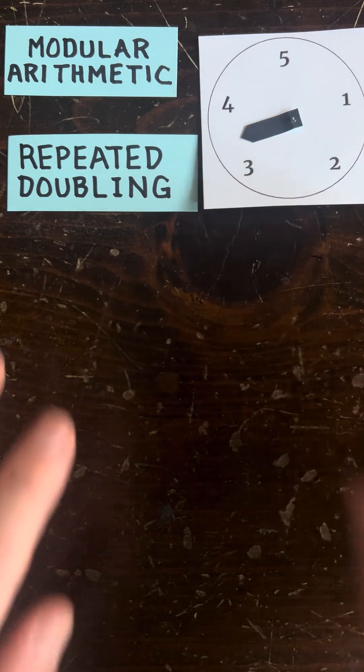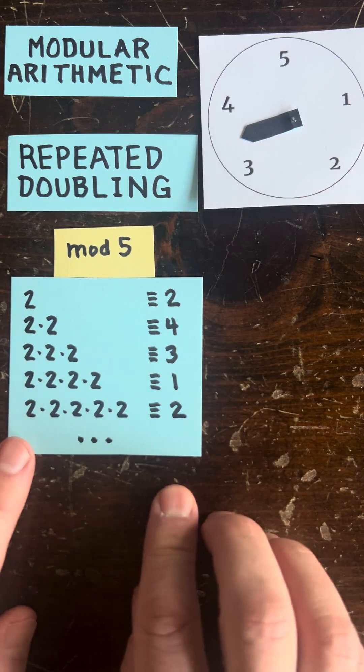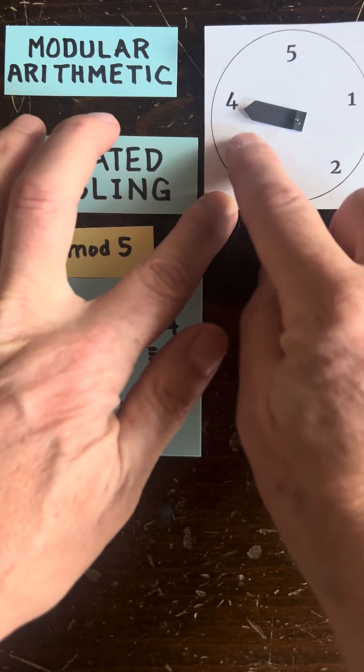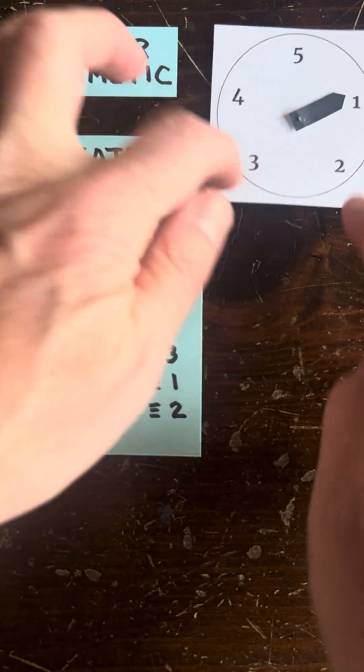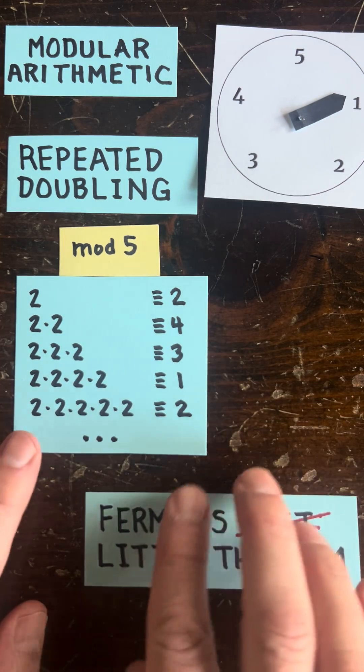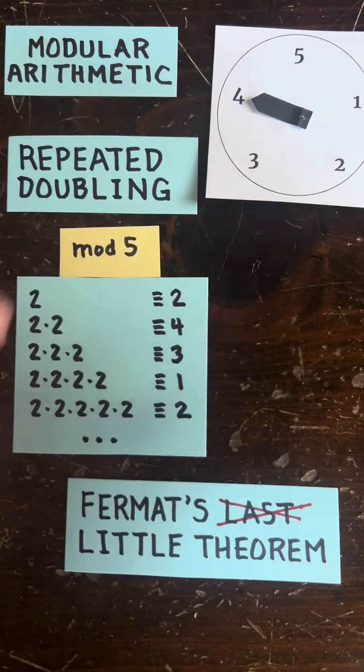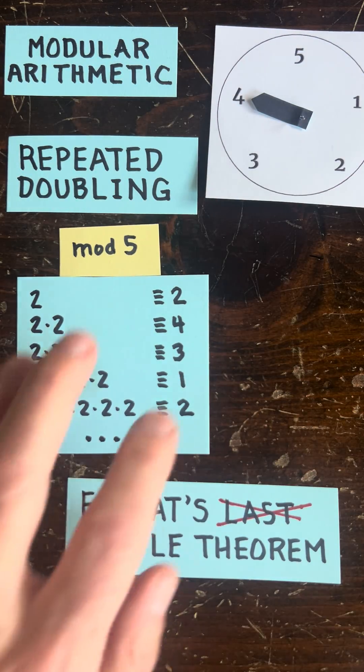But if you have a clock with a prime number of hours on it, you'll always get to 1 o'clock. So for example, here we get 2 and then 4, 4 doubled is 8, which is 3, and 3 doubled is 6, which is 1. And this is Fermat's little theorem that you'll always hit 1. And Fermat can even tell you when you'll hit it, which is the number of hours minus 1. 1, 2, 3, 4 steps, and you're guaranteed to hit 1.